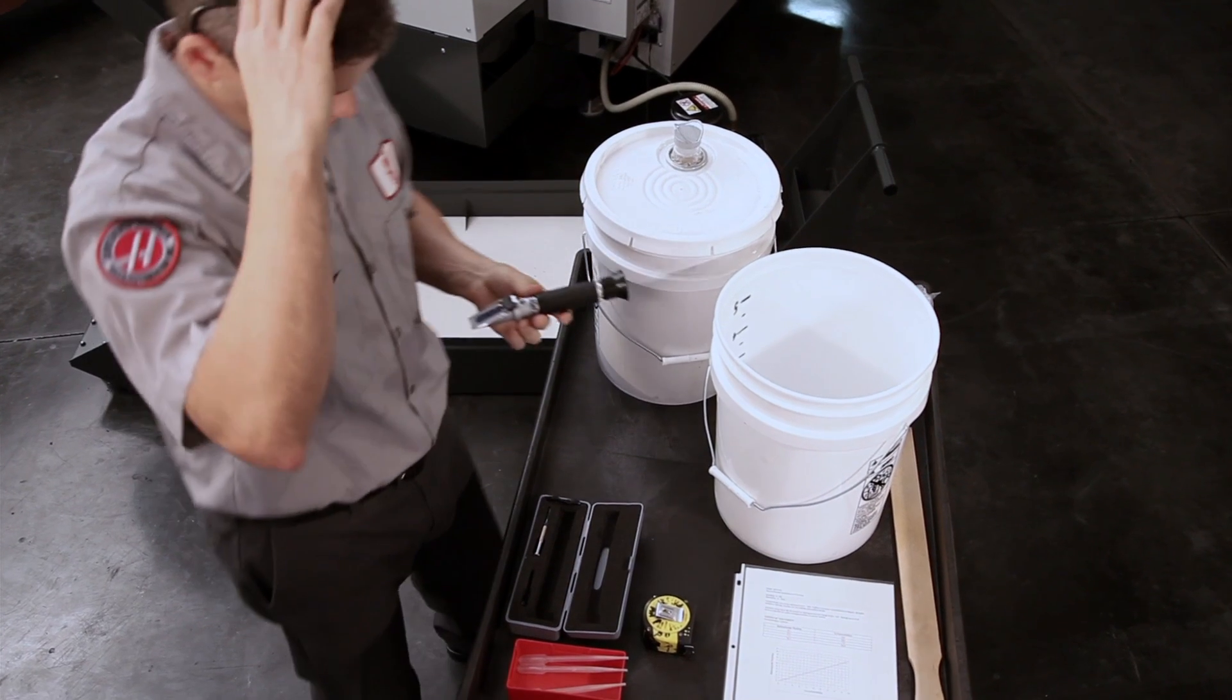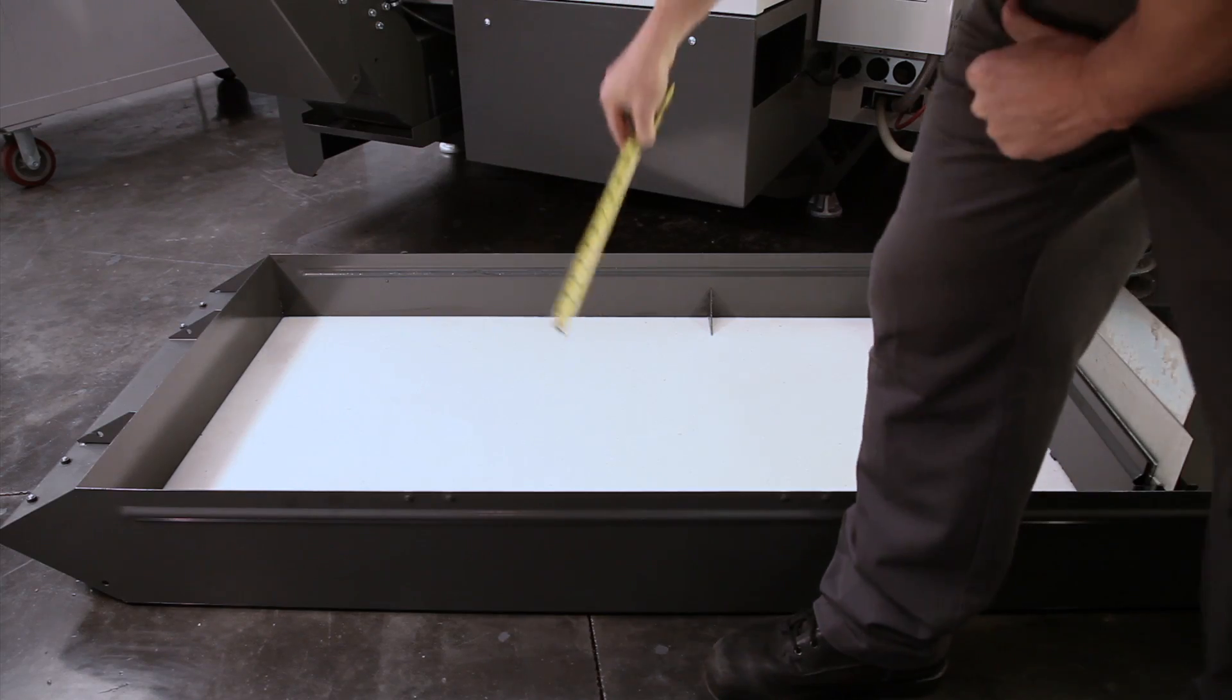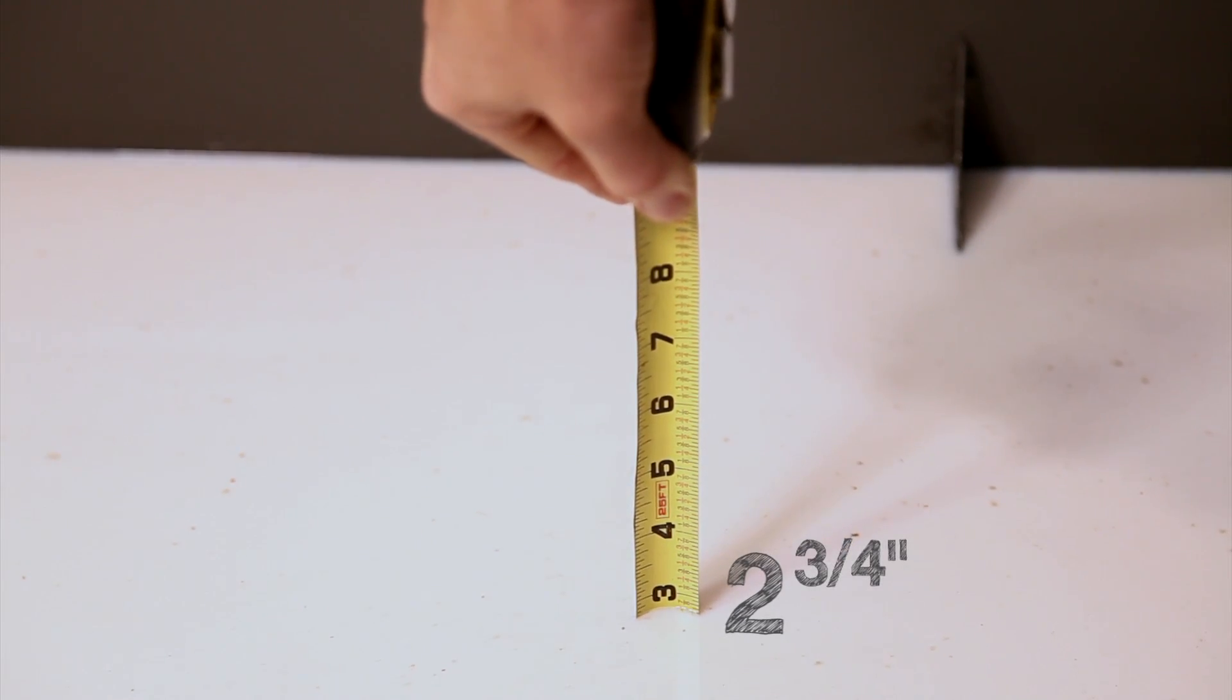Let's fix this low concentration 55 gallon tank. First measure the coolant level in your tank. We get two and three-quarter inches.